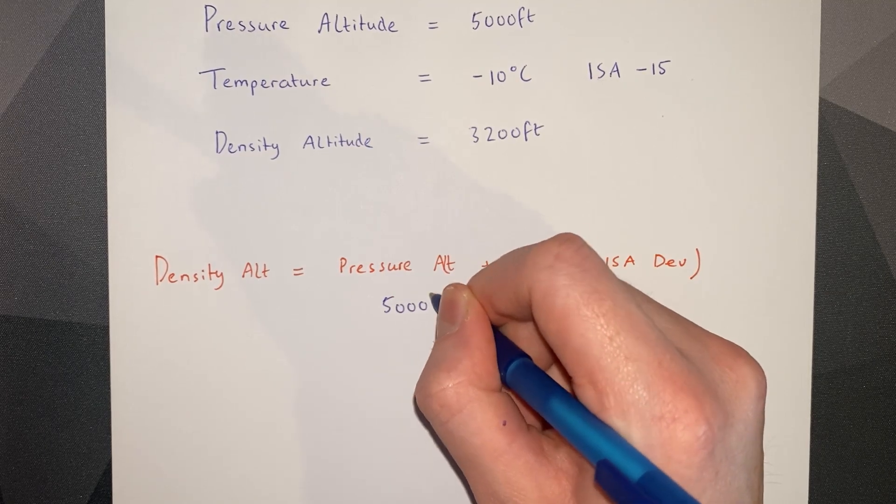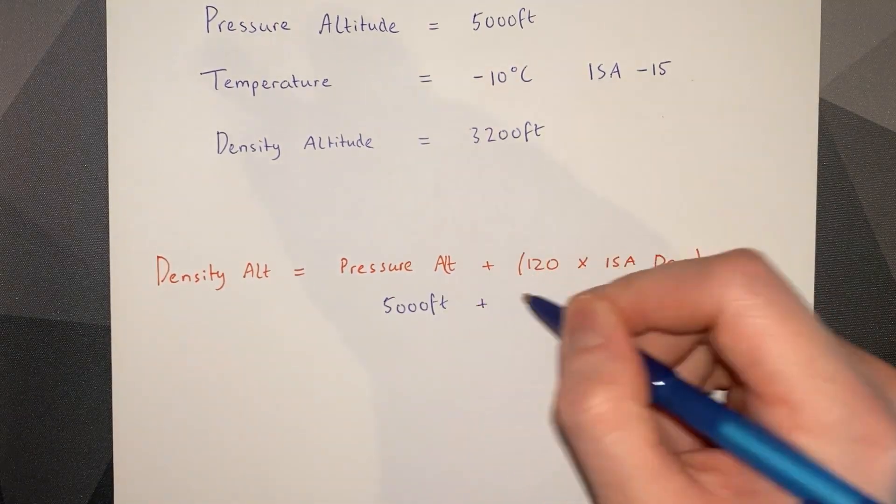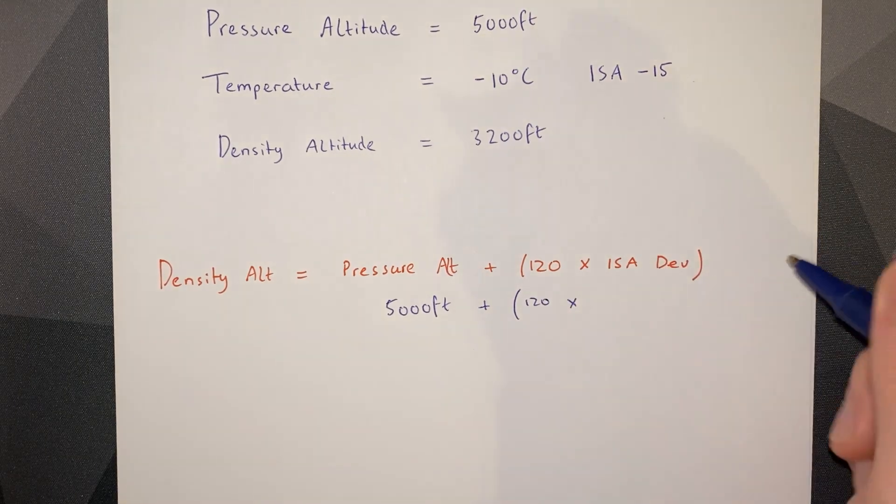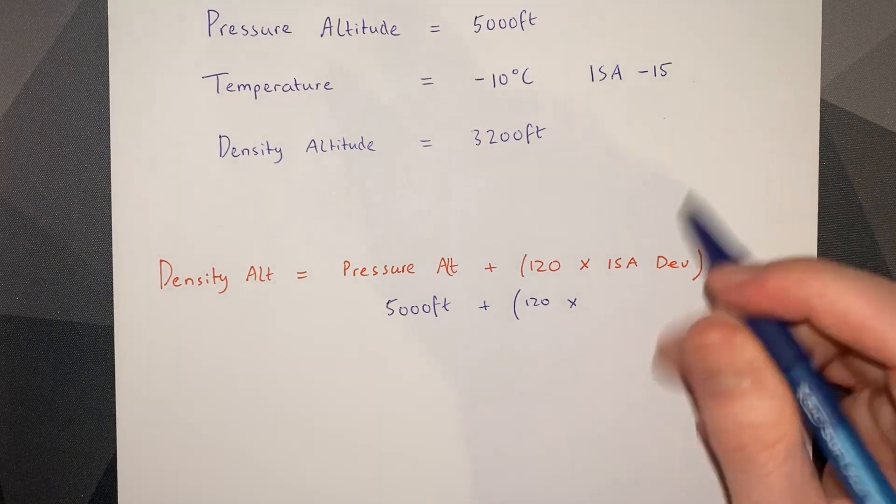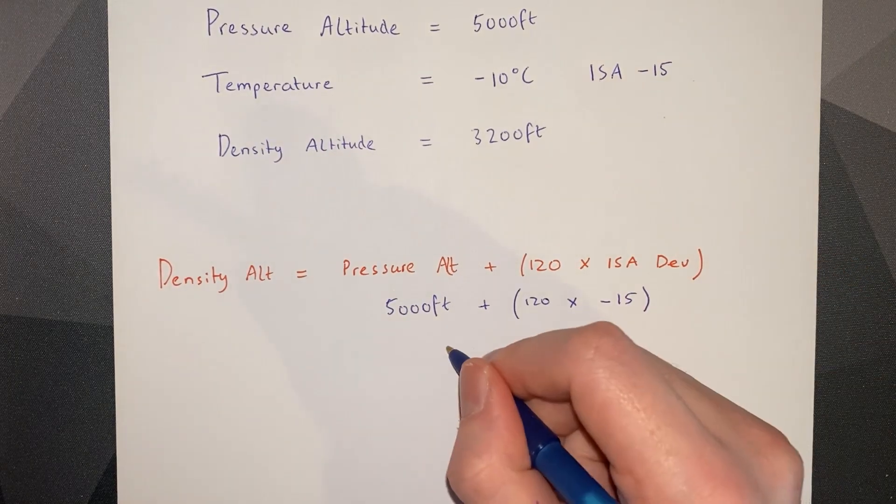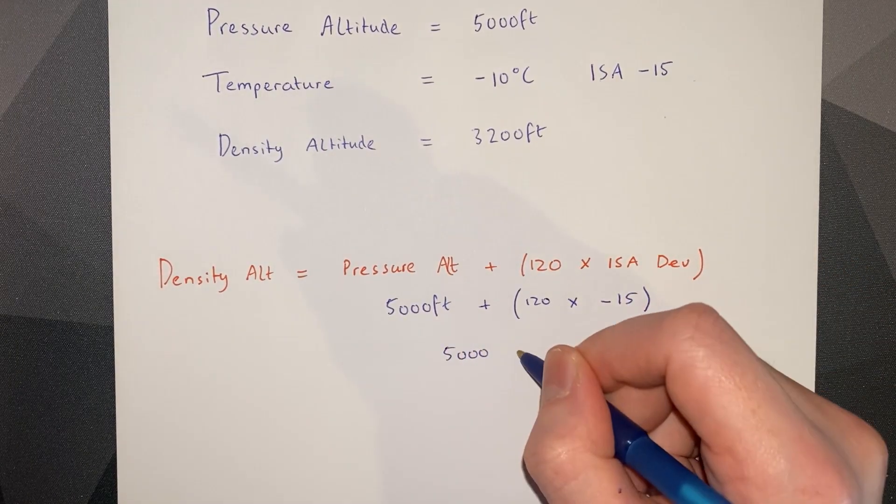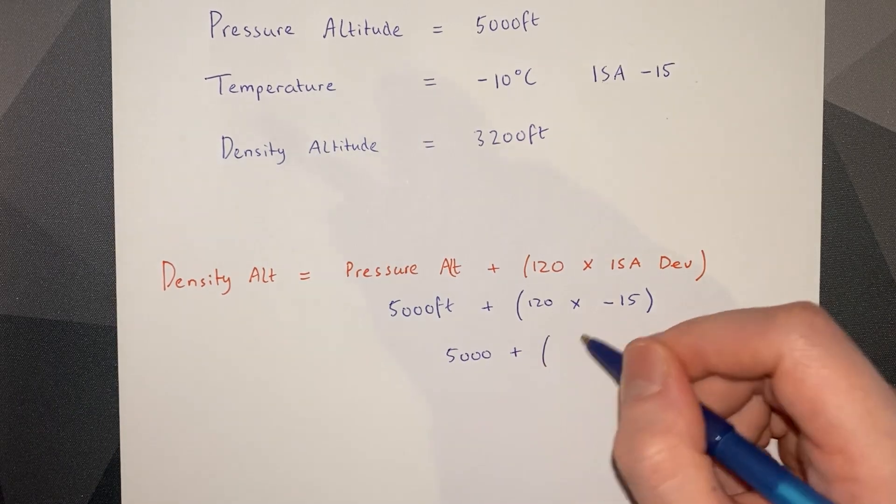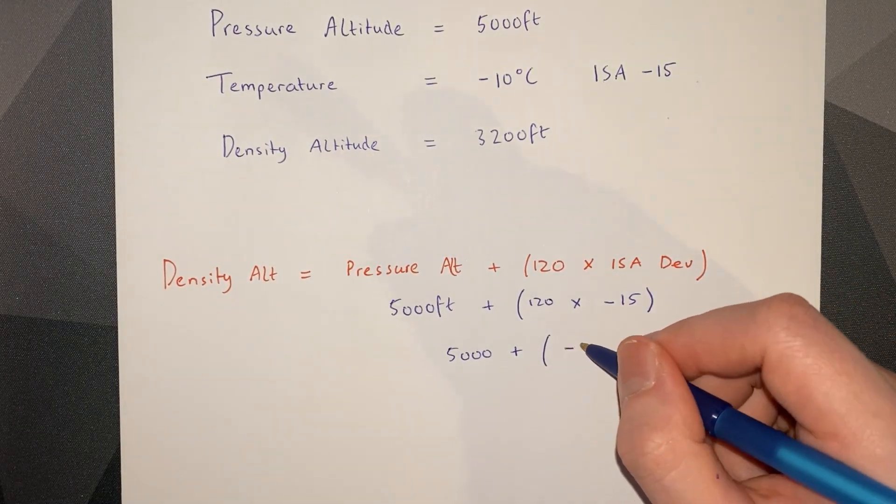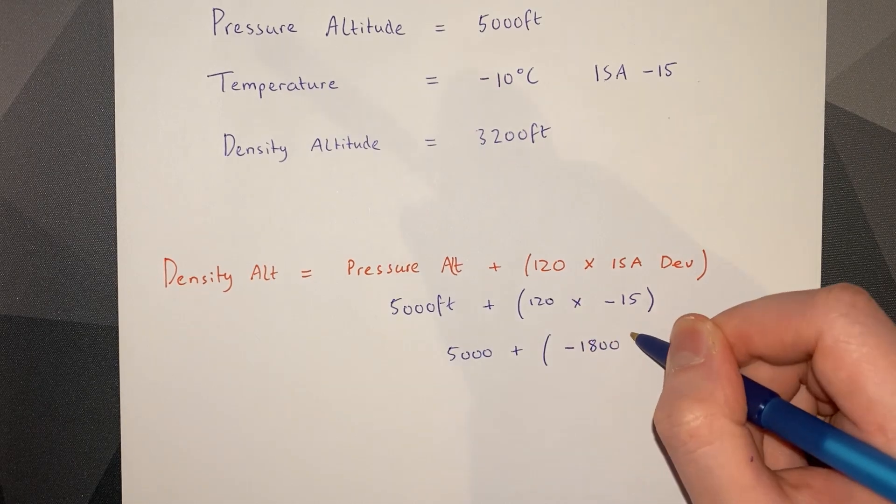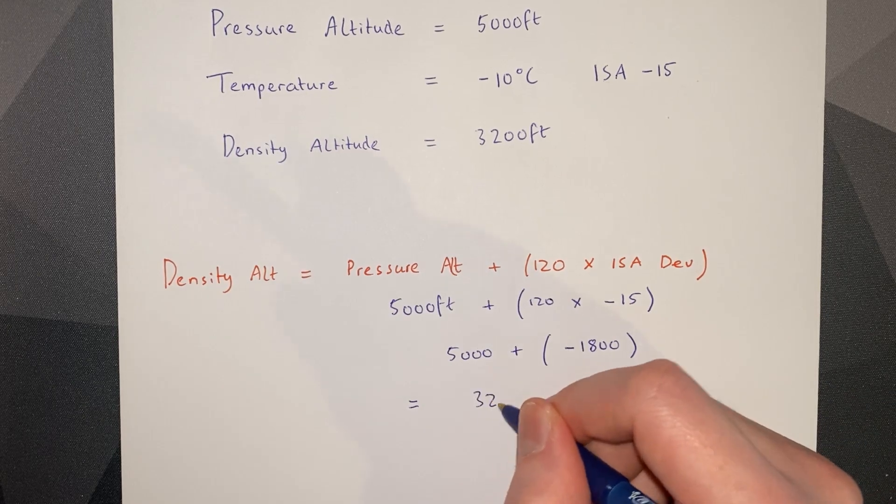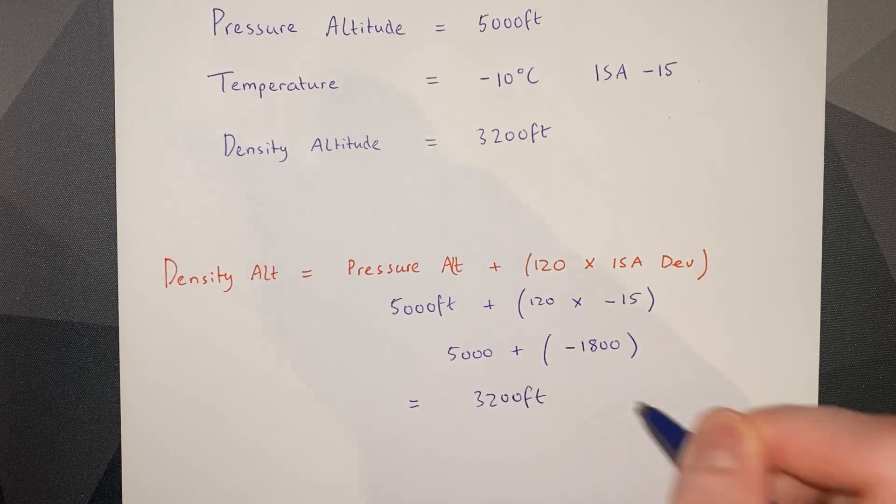We have a pressure altitude of 5,000 feet. We add 120 times our ISA deviation of minus 15. So 5,000 plus 120 times minus 15 gives us minus 1,800. Adding that out, our density altitude equals 3,200 feet.